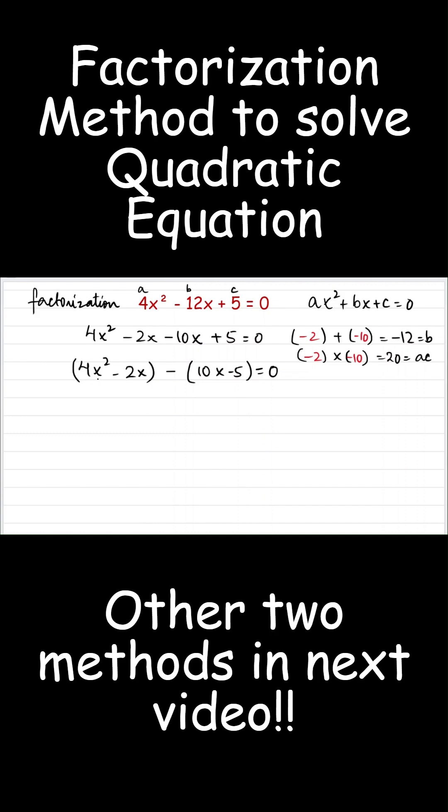Now, we will take the common factor. So what is the common factor of 4x squared minus 2x? It's 2x. 4x squared divided by 2x is 2x minus 2x divided by 2x is 1 minus. What is the common factor of these two terms? It's 5. 10x divided by 5 is 2x minus 5 divided by 5 is 1 equals 0.